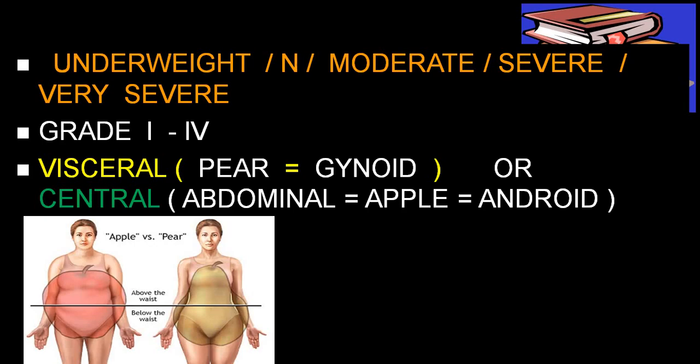Patients can be divided into groups: underweight, normal, moderate obesity, severe obesity, and very severe obesity — graded from grade 1 to grade 4 or 5. Central or abdominal (apple/android) obesity is more common in males, while visceral or pear-shaped (gynoid) obesity is more common in females.